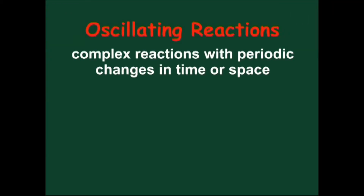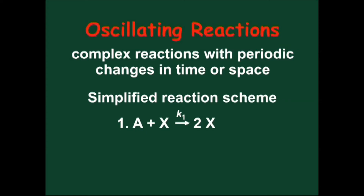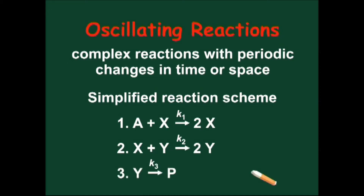Oscillating reactions are complex reactions that show periodic variations of some of the components in time or space. The first step is an autocatalytic process where X is an intermediate. In the second step, X reacts with another intermediate Y in a second autocatalytic process. The final step is the conversion of Y to the stable product P.